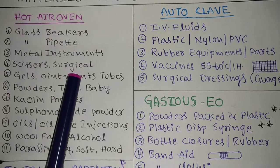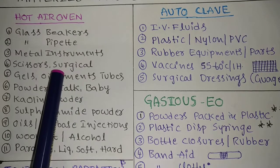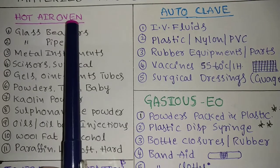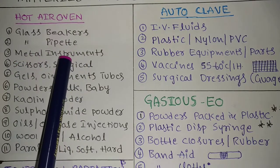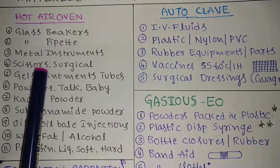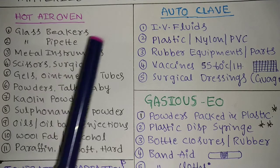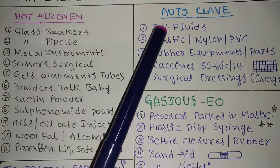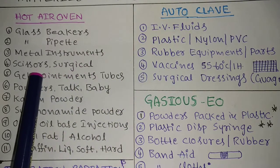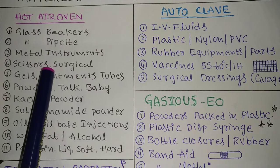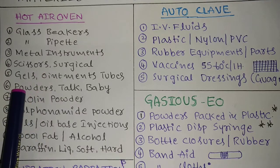Metal instruments, like scissors and surgical equipment, are sterilized by using the hot air oven. For metal instruments, don't go for autoclave — if you use autoclave, there is a chance of rust formation because the moisture deposits on the metal items and they get rusted. That's why we do not use autoclave for metal instruments.